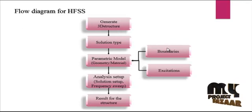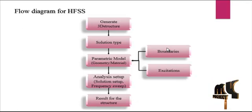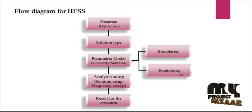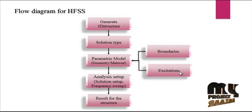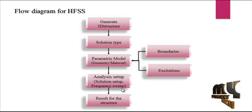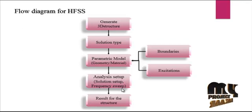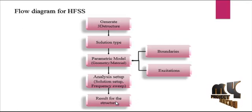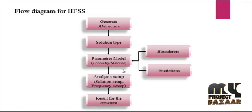Here we are using the boundaries and excitations. For boundaries, we are using the perfect electric boundary. For excitation, we are using two excitation types: one is wave port and another one is lumped port. Finally, we calculate the analysis setup, where we specify the frequencies — whatever frequencies are needed. The result of the structure will be calculated using these overall antenna parameters.